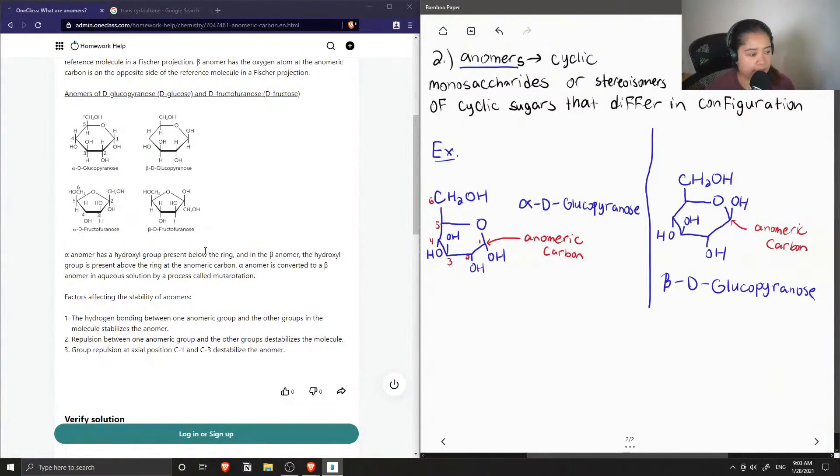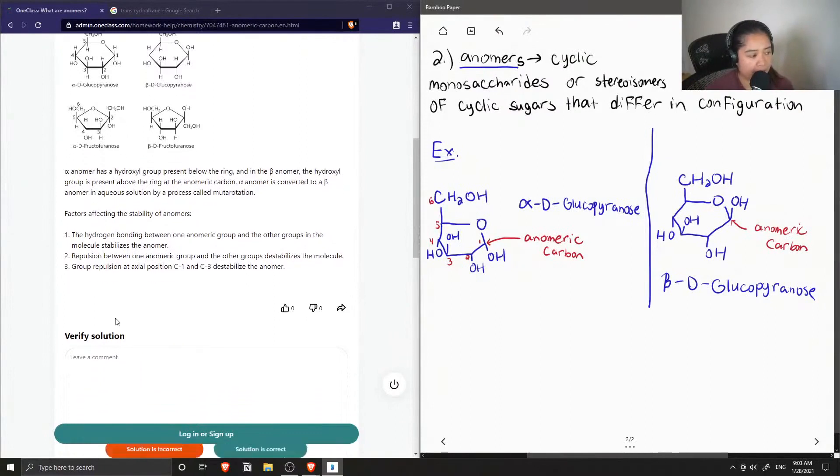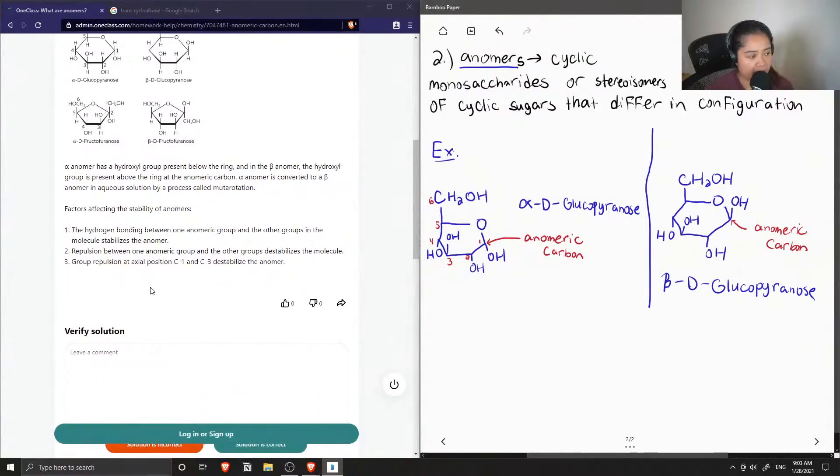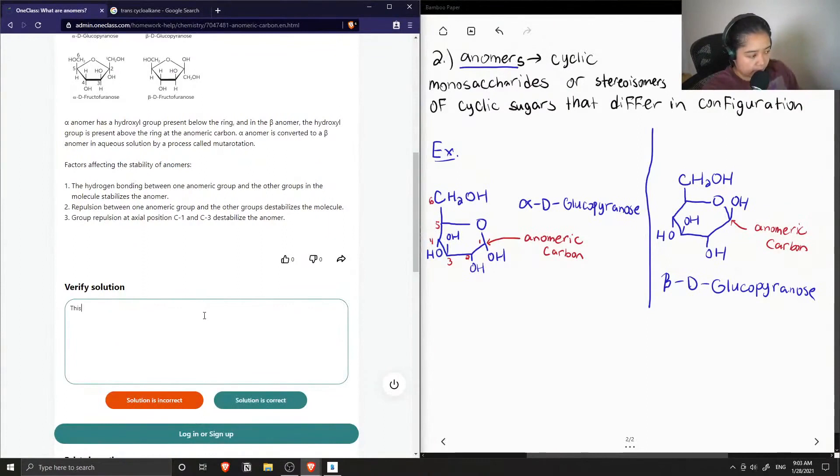The alpha anomer is converted to beta anomer in aqueous solution by a process called mutarotation. So there are different factors that affect the stability of anomers. The hydrogen bonding between one anomeric group and the other groups in the molecule stabilizes the anomer. You could have repulsion between one anomeric group and the other groups that destabilizes the molecule. And finally, group repulsion at axial positions C1 and C3 destabilizes the anomer. Yep, so the solution is correct.